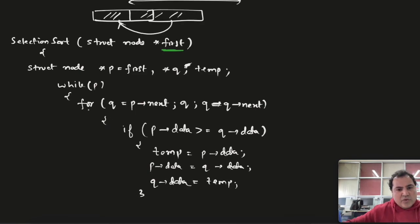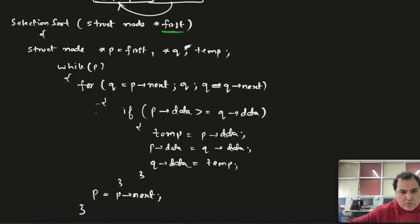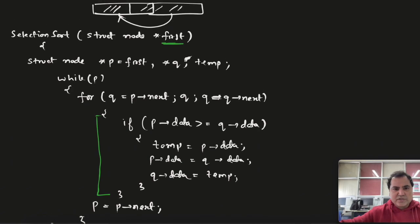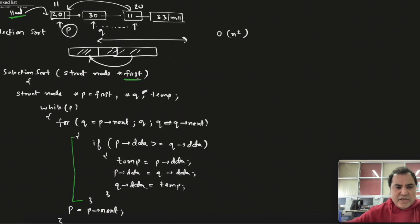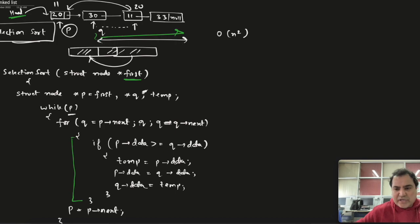After the inner loop completes for one value of p, increment p: p equal to p->next. This function is the complete implementation of selection sort. We take pointer p, and for every value of p we move q in the right direction, and whenever we find a smaller value we swap.